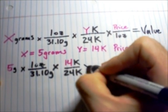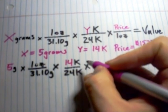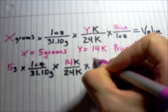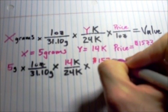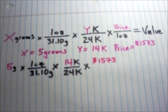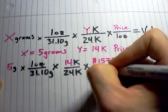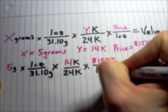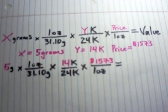All right. Times 1573 per one ounce. And that's going to give us how much it's worth.